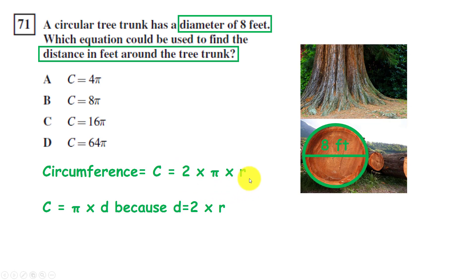So if we know D, which is 8, and we know pi, 3.14, then we now know the distance around the tree trunk. Circumference, in this case, is equal to pi times 8. Do you see an answer above that matches that answer? You'd be correct if you said B.